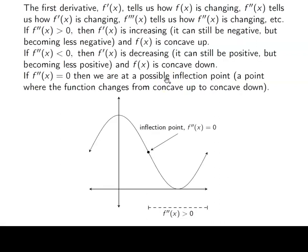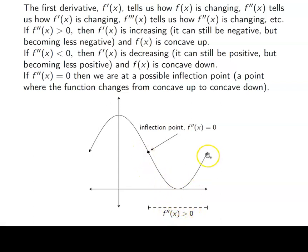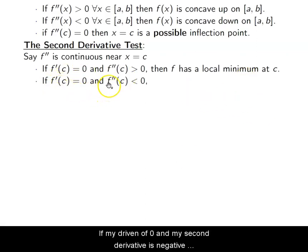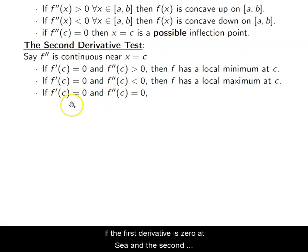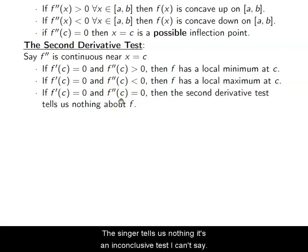If my derivative is zero and my second derivative is positive — concave up with a horizontal tangent — that means I'm at the bottom of a valley: a local minimum. If my derivative is zero and my second derivative is negative, then I'm at the top of a hill: a local maximum. If the first derivative is zero at c and the second derivative is also zero at c, then the second derivative test is inconclusive — I can't say whether I'm at a local max, min, or inflection point.